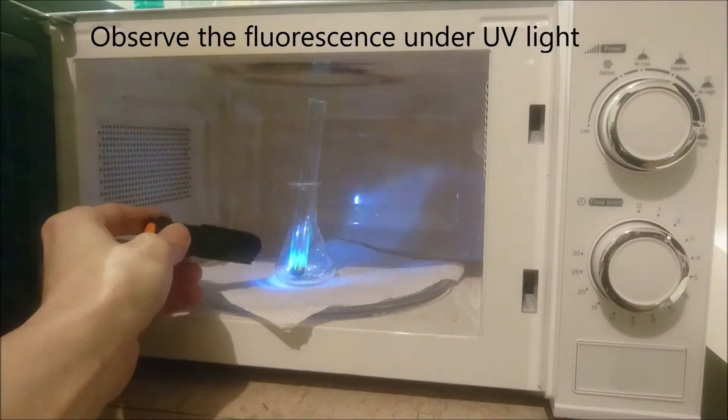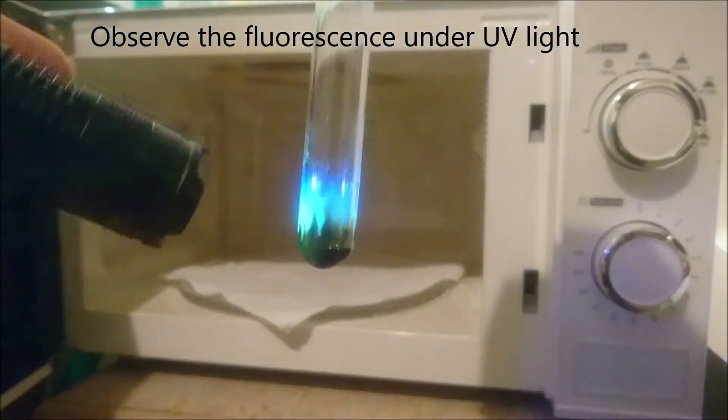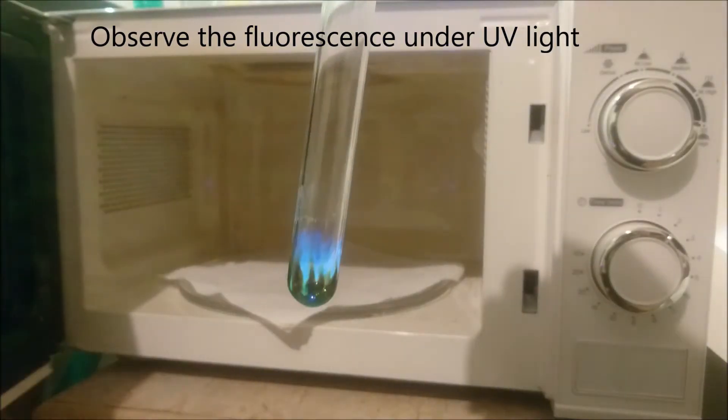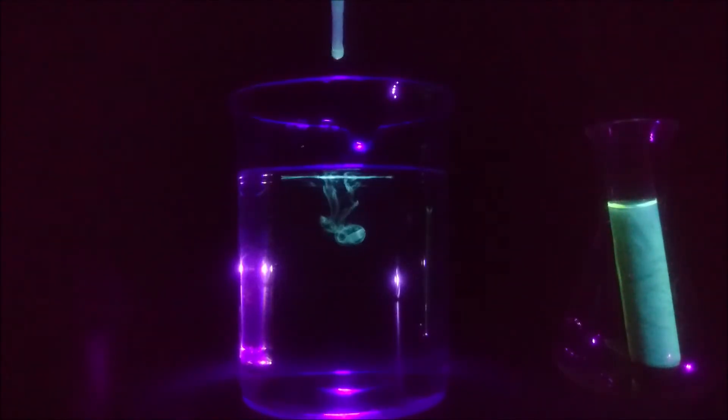Let the reaction cool down and observe the fluorescence under UV light. The color of the fluorescence is bluish when the UV wavelength of 380 nanometers is used for excitation, and it will become more yellowish under 405 nanometers UV wavelength.